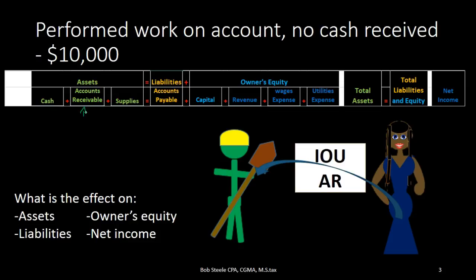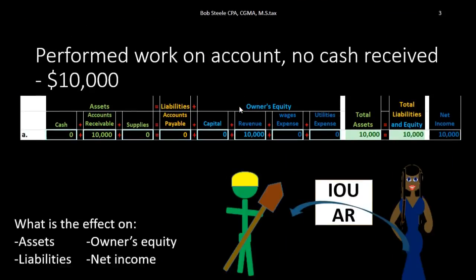What will be the other side of the transaction? Remember that every transaction is going to have at least two accounts affected. Why are people going to pay us in the future? Because we earned revenue — we did work and therefore we earned revenue. Revenue is over here in the equity section. Revenue goes up; it really only goes up in one direction. Expenses will bring equity down, but revenue generally just goes up.